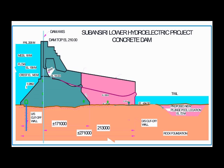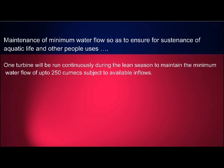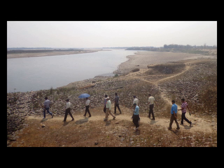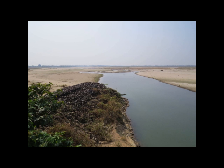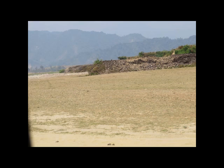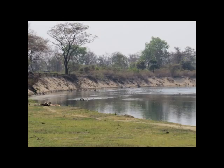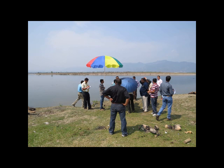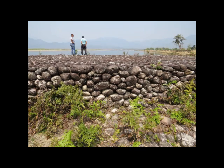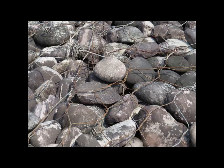For downstream riparian rights and sustainable biodiversity, one unit will be run continuously during the lean season to maintain a minimum water flow of 250 cubic meters per second, subject to available inflows. The expert group has suggested protection measures up to 15 kilometers downstream. The Joint Steering Committee has also recommended that necessary protection works in the 15-kilometer downstream stretch be carried out at locations worked out by NHPC, Brahmaputra Board, and the Water Resource Department, Government of Assam, with funding from NHPC. NHPC has decided to carry out protection works beyond 15 kilometers, potentially extended up to 30 kilometers downstream.